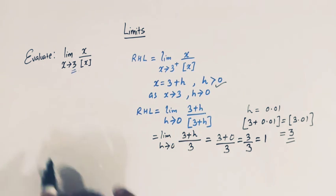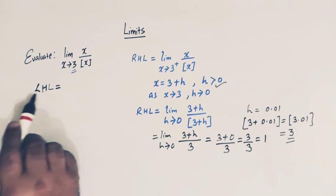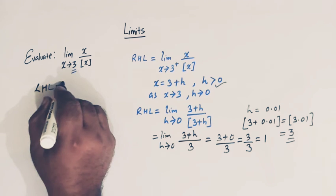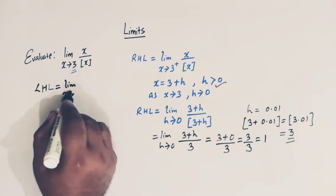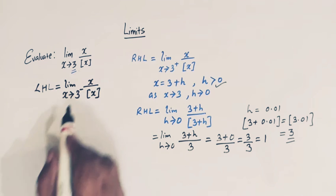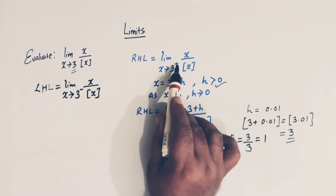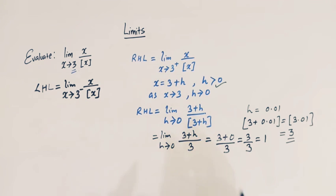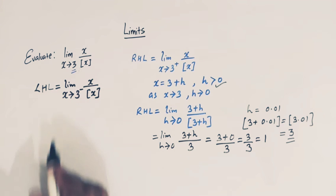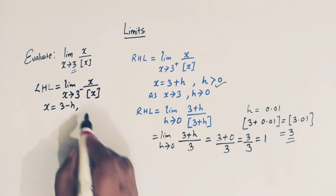So the right hand limit of this function is 1. Now let us find the left hand limit. The left hand limit is: limit x tends to 3 negative of x over greatest integer x. This negative sign indicates that we are approaching from values less than 3. Again we will make a substitution and let x equal to 3 minus h.